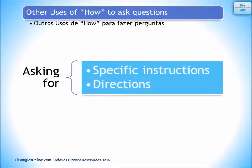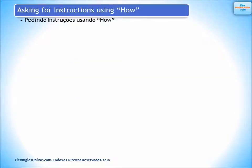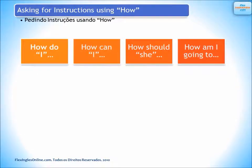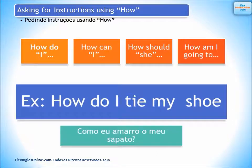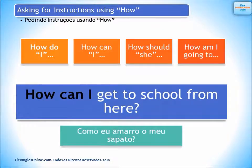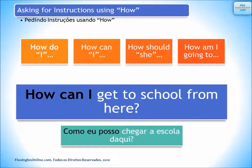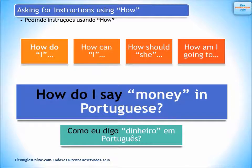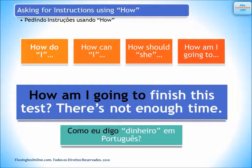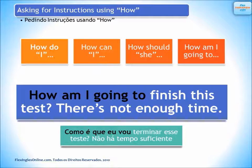Other uses of how to ask questions: we can use how to ask for specific instructions and directions. For example: How do I? How can I? How should she? And how am I going to? Examples: How do I tie my shoe? How can I get to school from here? How do I say money in Portuguese? And how am I going to finish this test? There's not enough time.